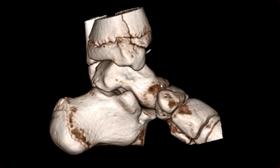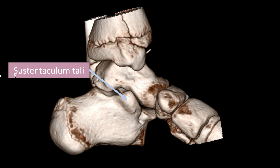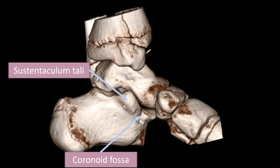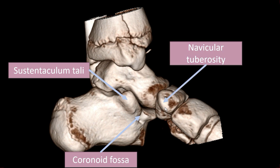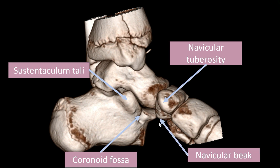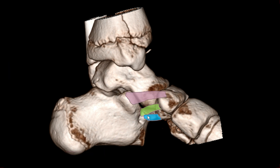Let's start off with the anatomic bony landmarks. First of all, we have the sustentaculum tali, which is this structure here — very important. Then, probably even more important for the identification of all these ligaments, especially the smaller ones, is the coronoid fossa, which is this fossa here. And then we have the navicular tuberosity, which is the most medial portion of the navicular bone, and on the plantar aspect we have the navicular beak. Keep these bony landmarks in mind as we go to the different portions of the spring ligament complex.